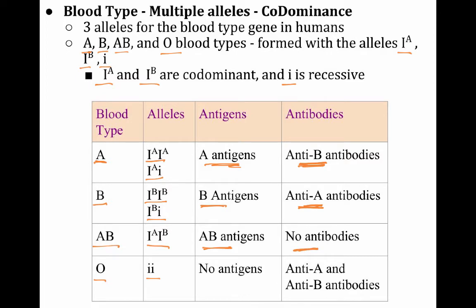So if you have type AB blood, you are called a universal recipient, because you can take any type of blood, because your body doesn't make antibodies against any of it. If you're type O blood, you have no antigens, but you have anti-A and anti-B antibodies.